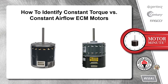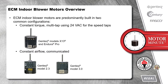In this segment of Motor Minute, we will talk about how to identify constant torque versus constant airflow ECM motors. ECM Indoor Blower Motors are predominantly built in two common configurations: Constant Torque Multi-Tap using 24V AC for the speed taps, and Constant Airflow Communicated.